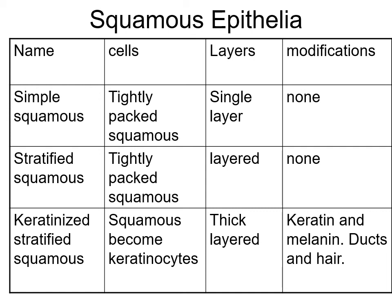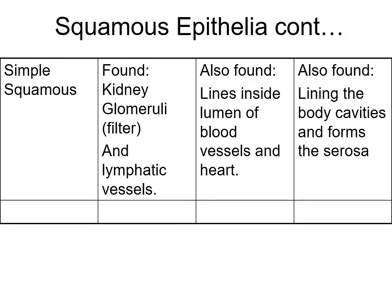Modifications: simple squamous epithelium has no modifications - no cilia, no microvilli. Stratified squamous also has no modification, but the skin is modified because it's filled with keratin. The skin also has ducts for sweat glands and oil glands, hair follicles, and melanin that pigments the skin.